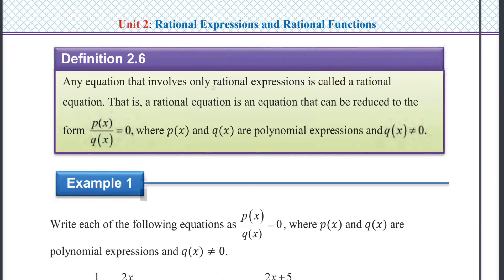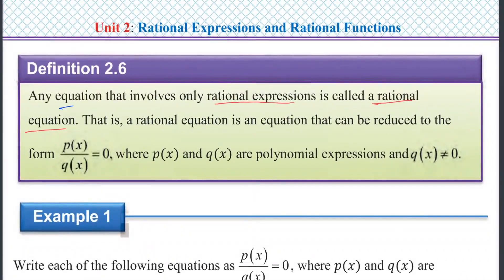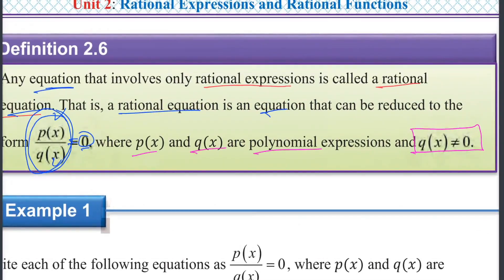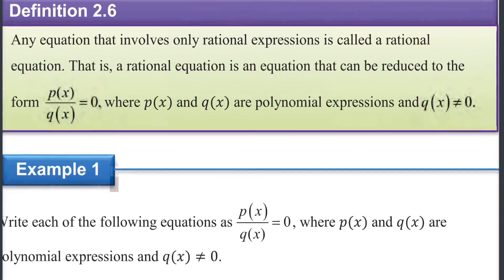Any equation that involves only rational expressions is called a rational equation. A rational equation is an equation that can be reduced to the form P of x over Q of x equal to zero, where P of x and Q of x are polynomial expressions.